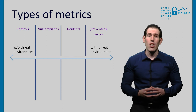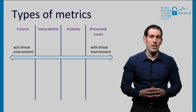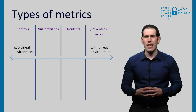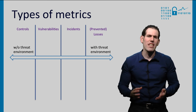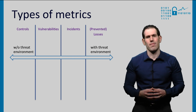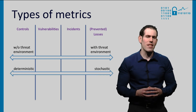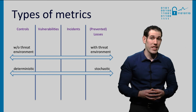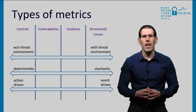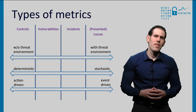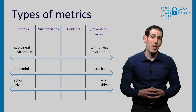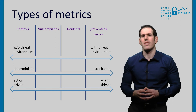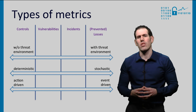Let's revisit the different types. On the left-hand side we have controls. This type of metrics captures what kind of protection measures you have in place. Since they only include information on what the organization itself is doing, they leave out the threat environment. As we move toward the right-hand side, the metrics increasingly include the threat environment, and therefore change from deterministic to stochastic variables. The metrics on the left-hand side are driven by defenders' actions — the controls they put in place and the vulnerabilities they discover. Towards the right, they are more driven by the events that occur when the controls and vulnerabilities interact with the actions of the attackers.